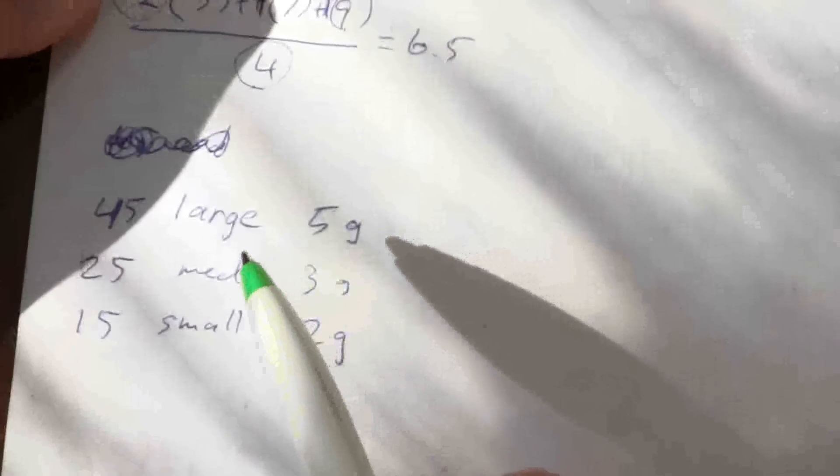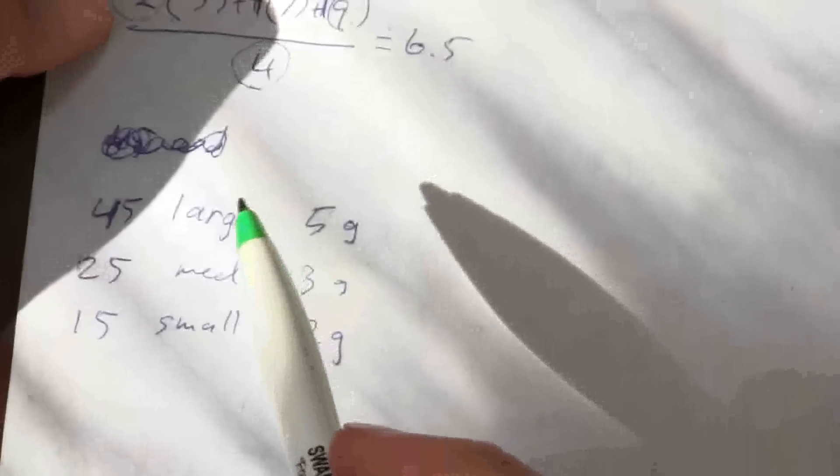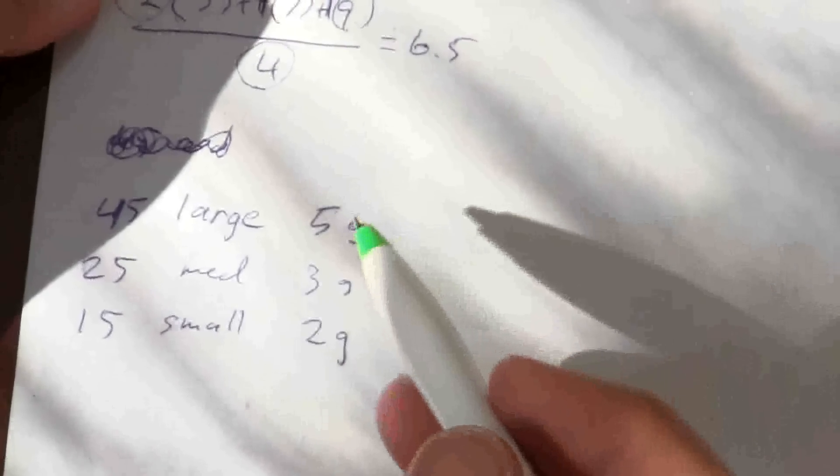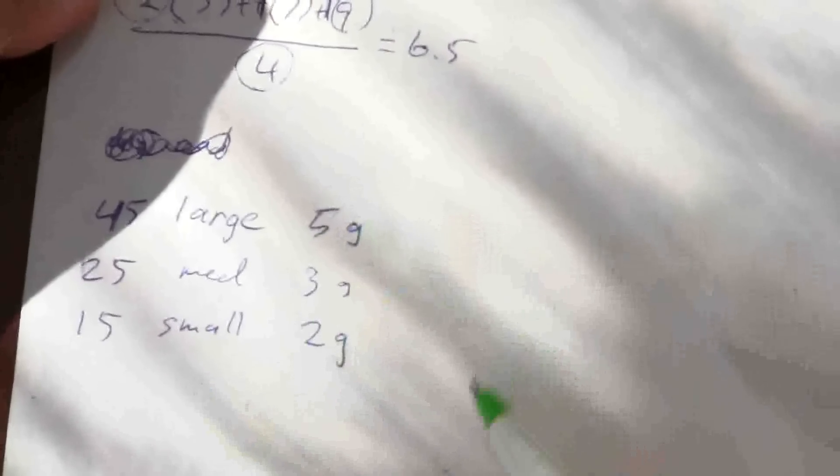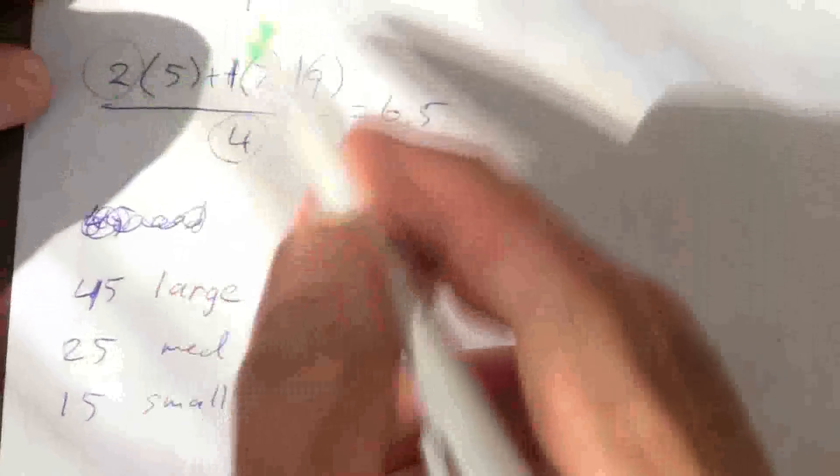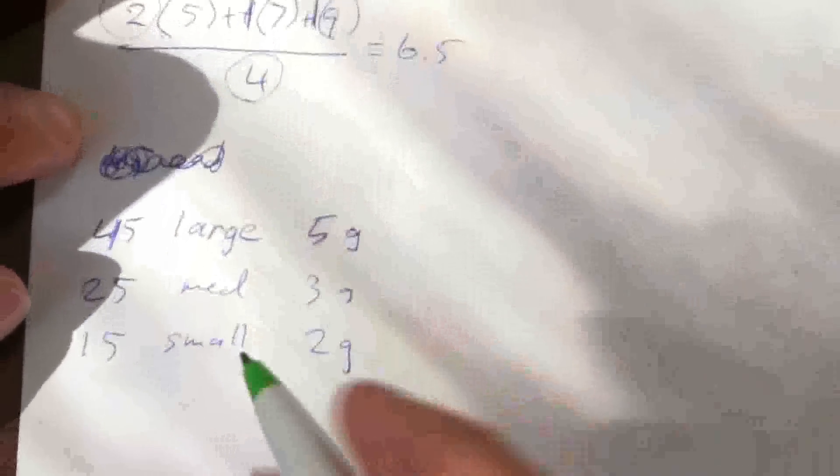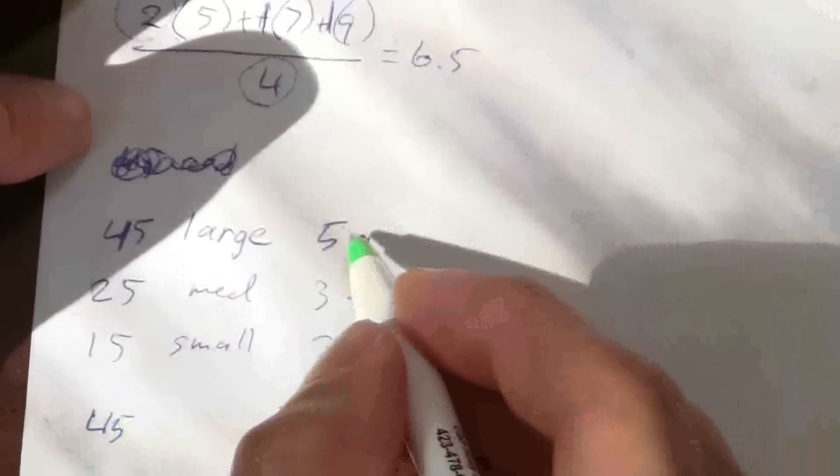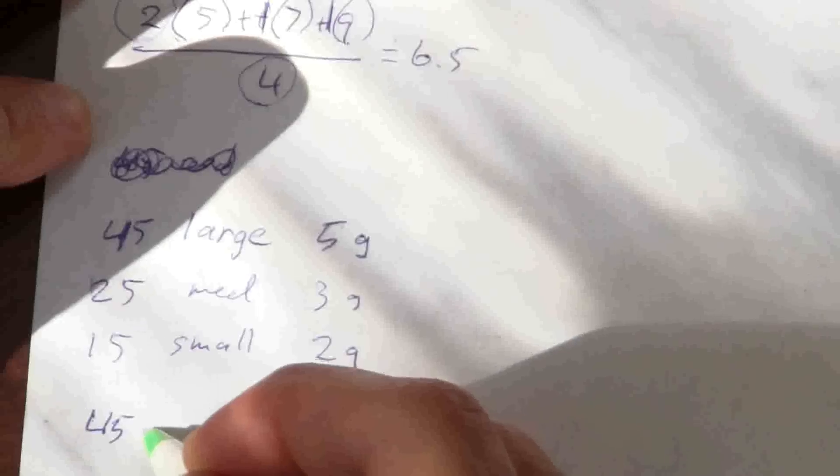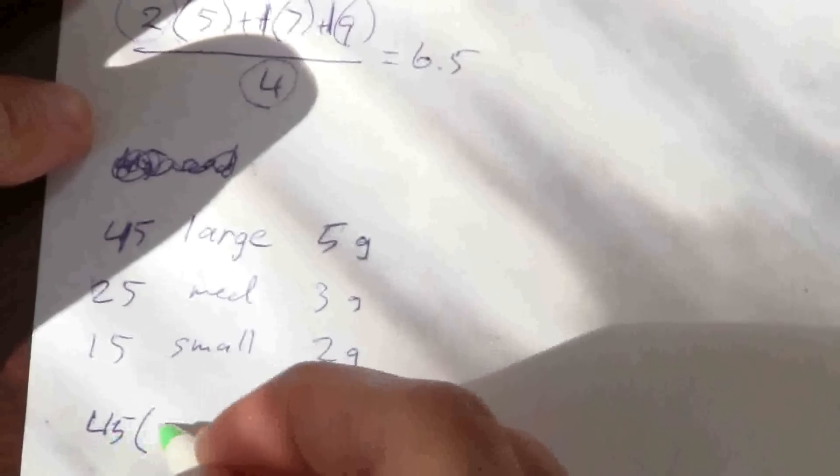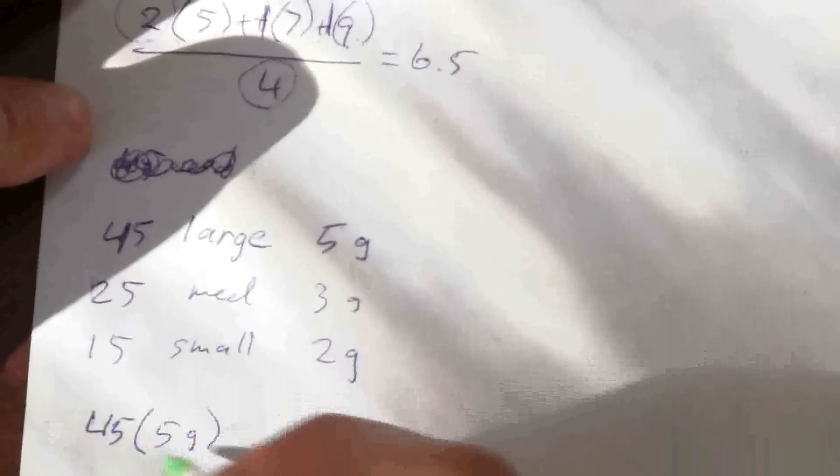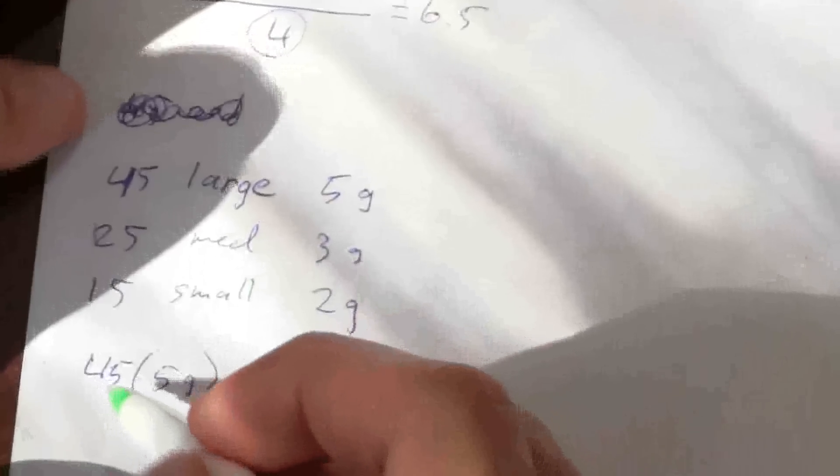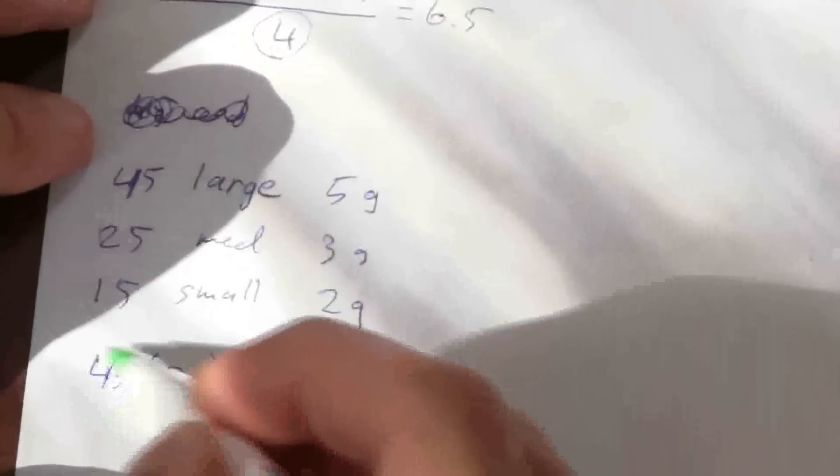Now I could add all of these marbles up and divide by the total, add each weight up and divide by the total, but essentially the same thing, just like I was showing before, the same thing as doing that is saying I have 45 of the 5 gram marbles so 45 is my weight, 5 grams is the value. This is my weight in terms of the average.